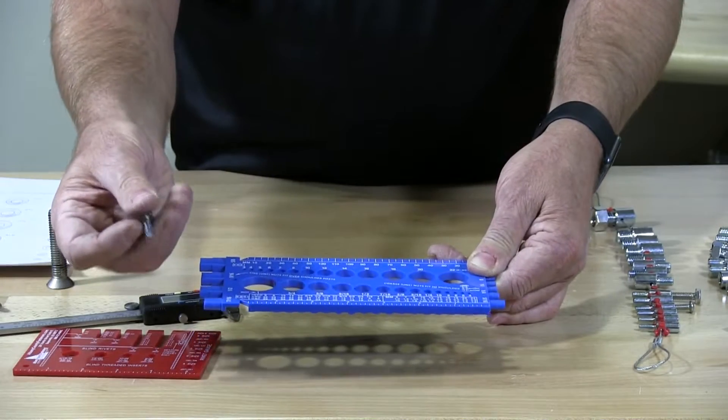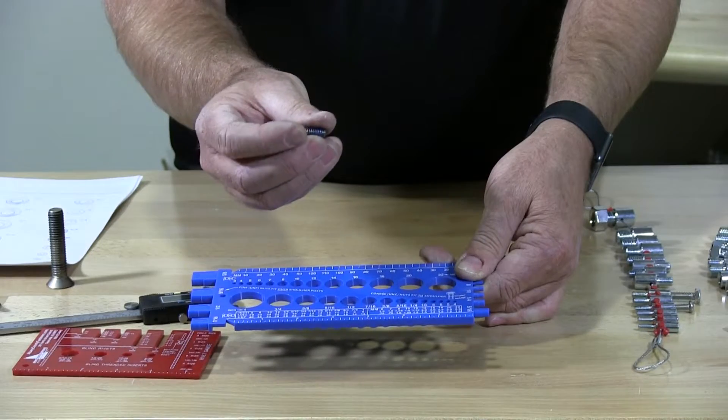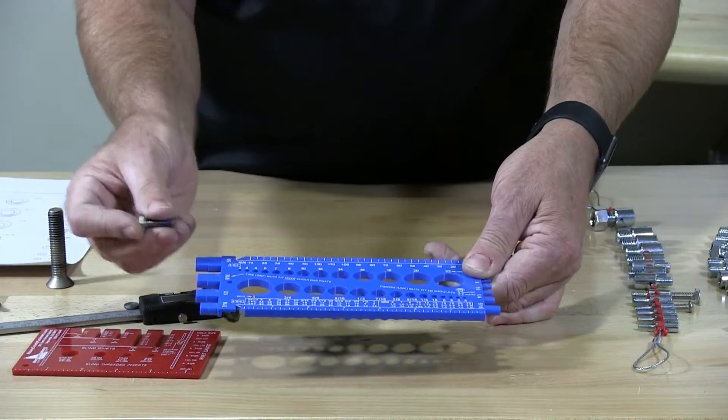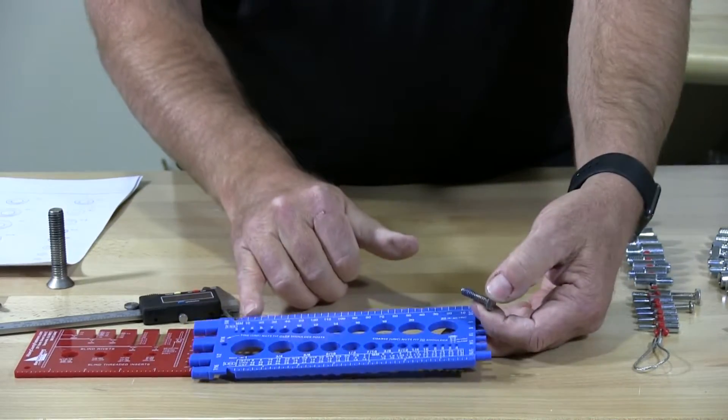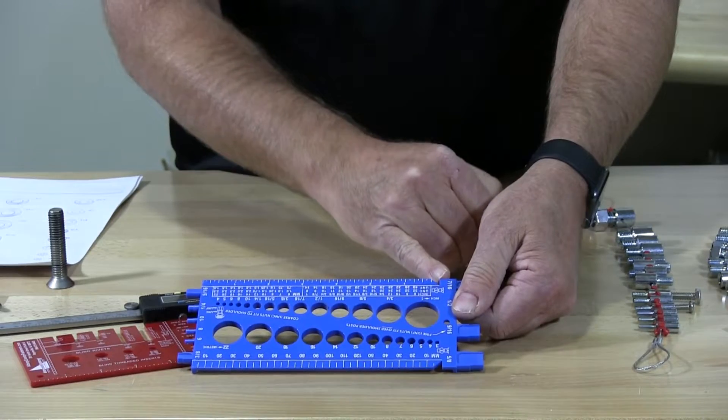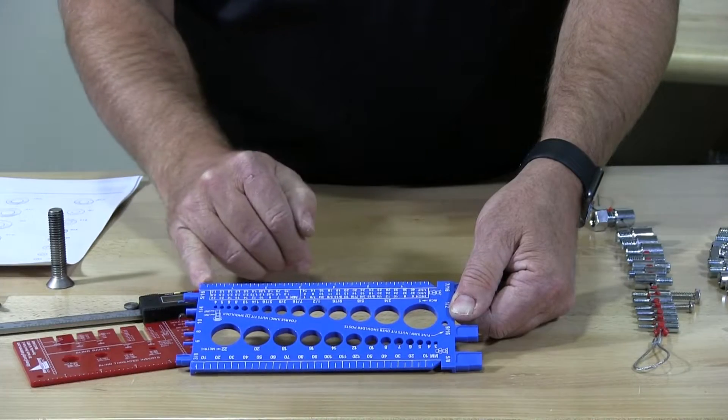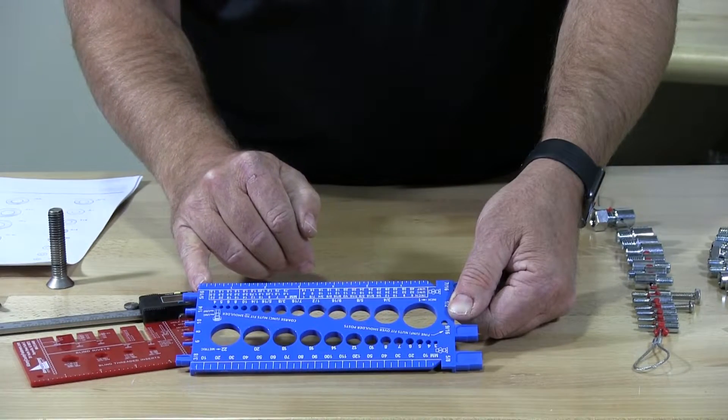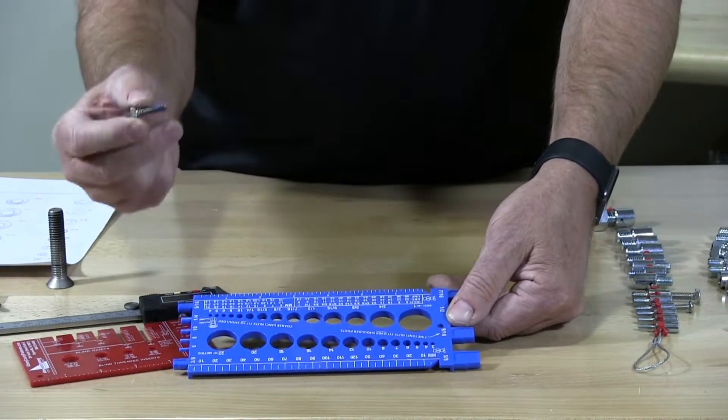And then to measure the length because hex cap screws are measured from under the head. So we would measure it from this side. This has two measuring points, it would be this side. We have two measuring points. This little angle cut in here is made for a flat head. And this side is made for the length from under the head.